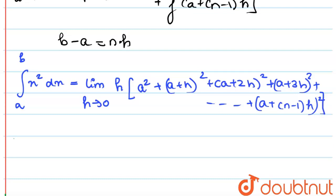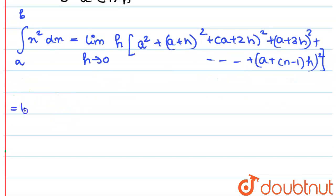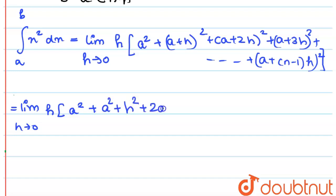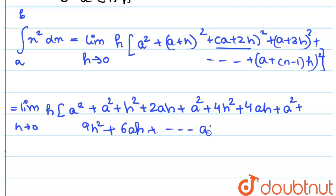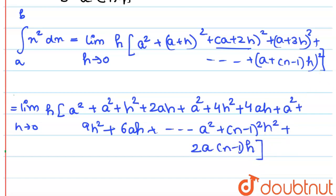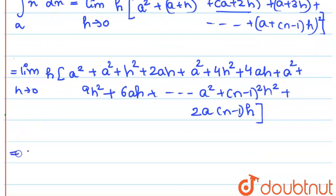Now let us open these brackets. This gives: limit h tends to 0, h times [a squared, then opening (a+h)² gives a²+h²+2ah, opening (a+2h)² gives a²+4h²+4ah, opening (a+3h)² gives a²+9h²+6ah, going on till a² + (n-1)²h² + 2(n-1)ah].